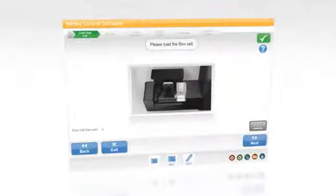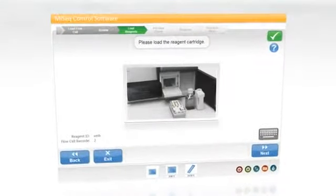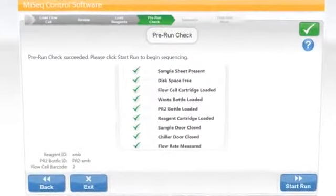In any run, a user will be given guided instructions with context-specific help to tell them how to set up a run parameter, how to load a flow cell, how to load the reagents—basically how to get everything ready for a run, and then it will do a pre-flight check.